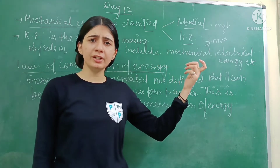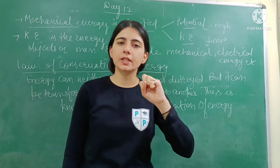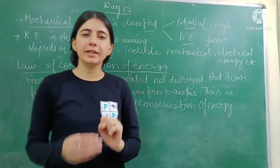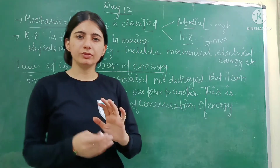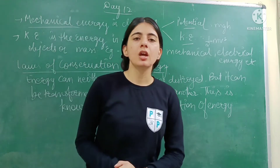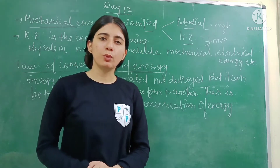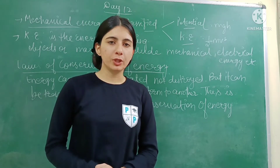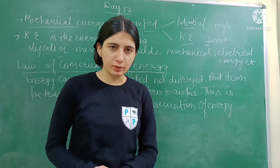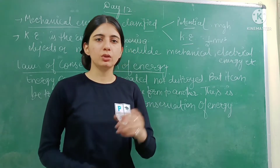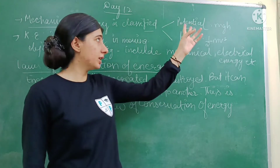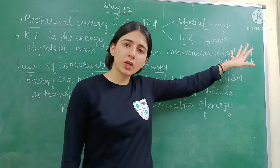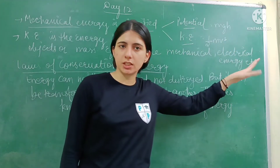If you have a body with a mass at a height above the Earth's surface and you want to calculate the object's potential energy, then you use MGH. The formula of potential energy is MGH.